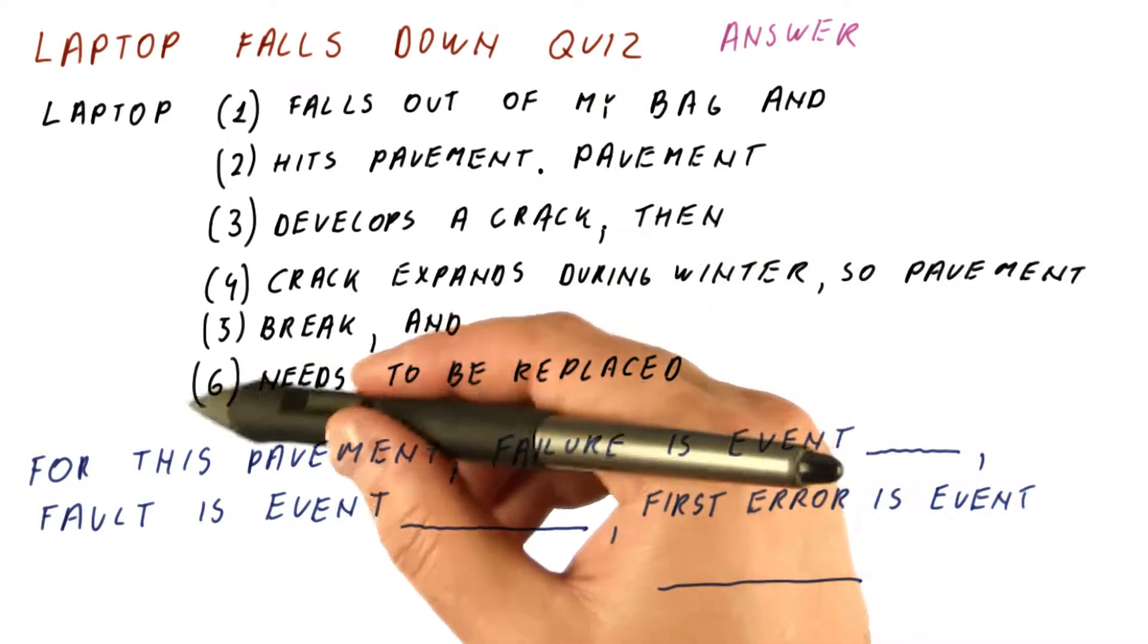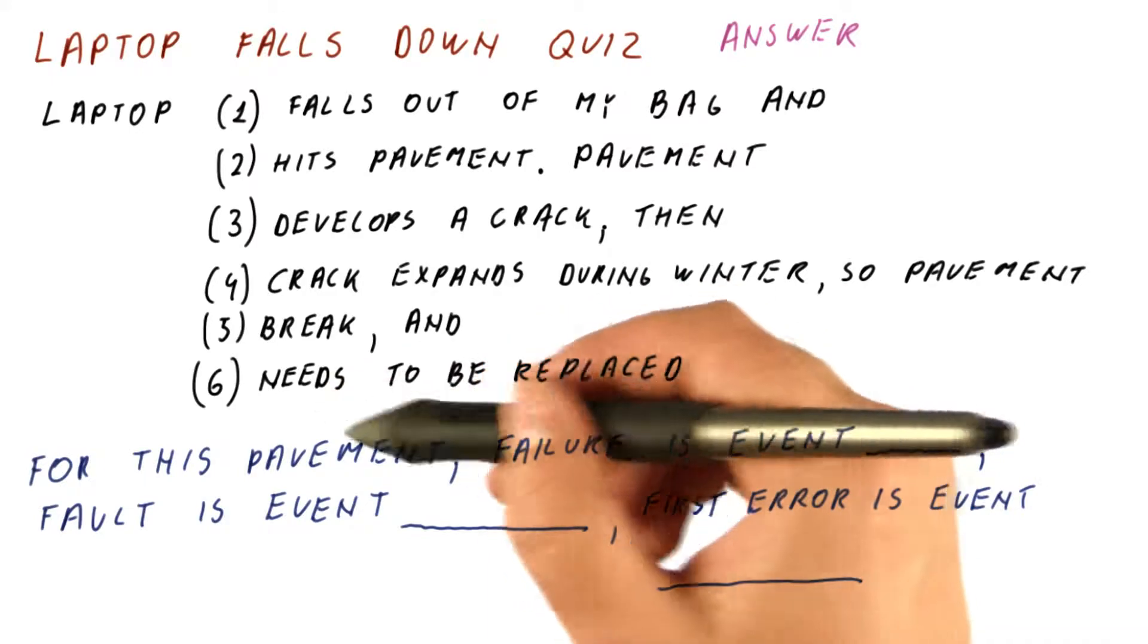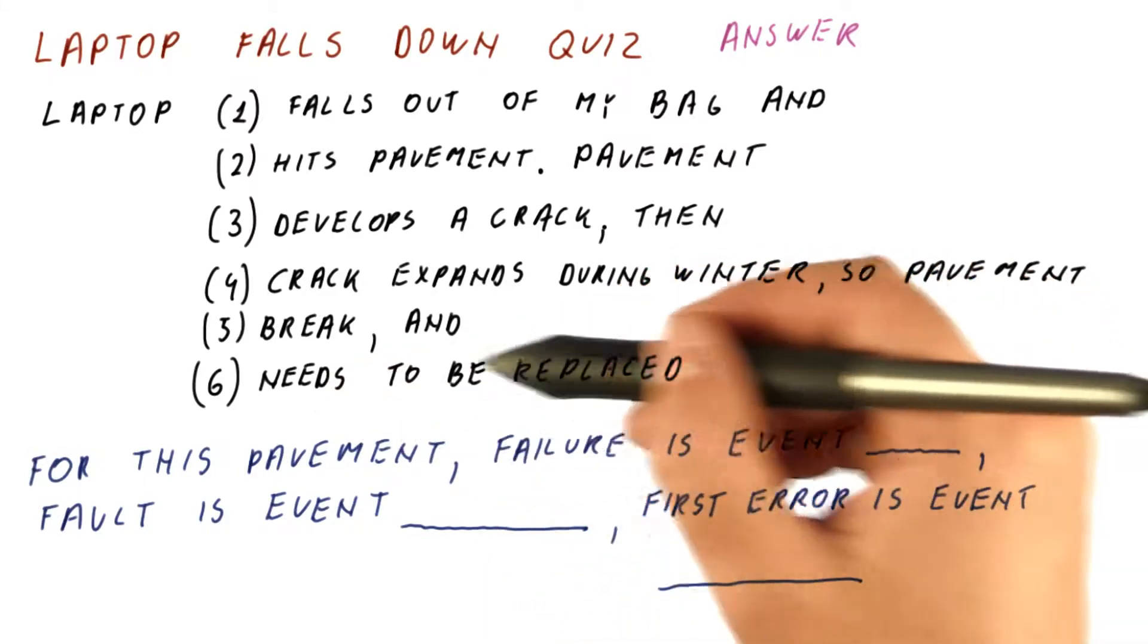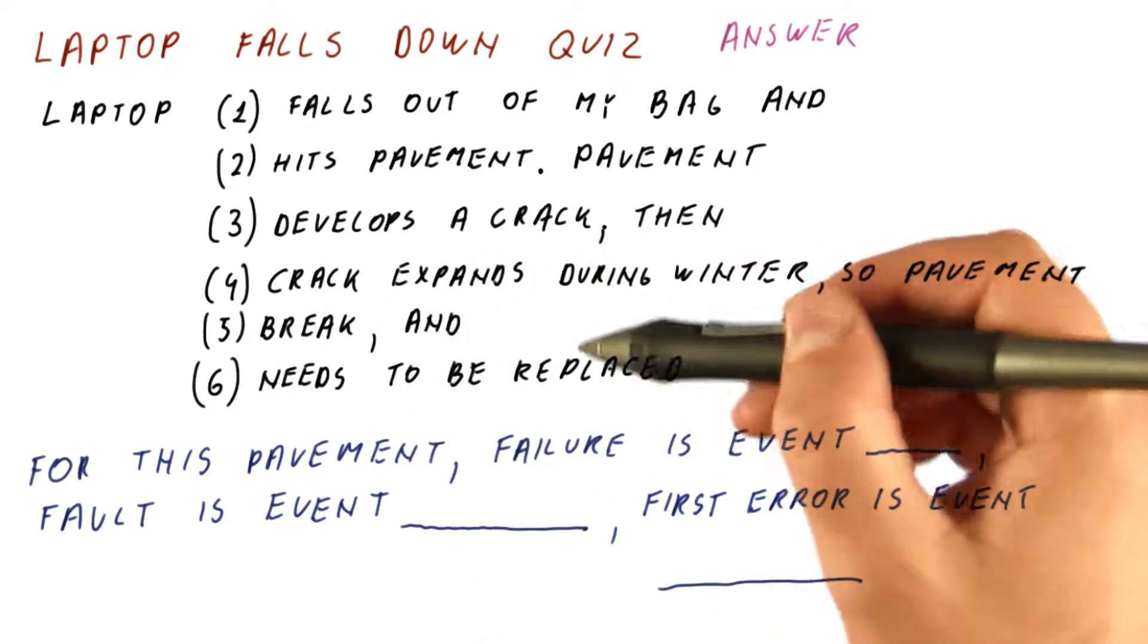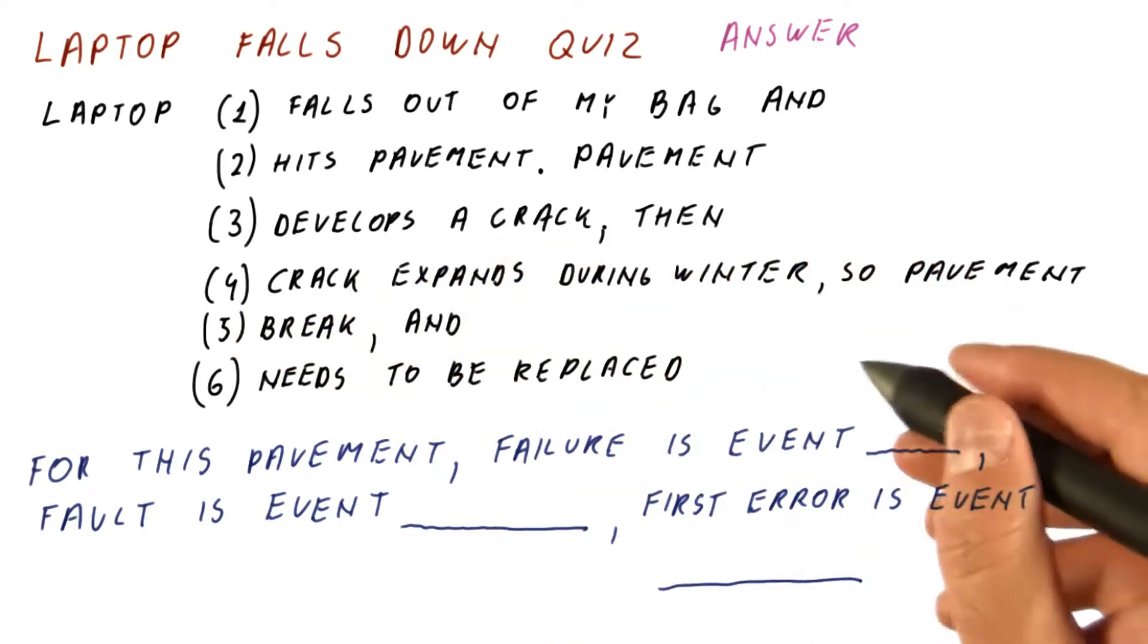Here, you might be tempted to say that it needs to be replaced is the failure. But actually, that's the repair of the failure. This is fixing the pavement. It's not something that causes it to deviate from its function. Really, it breaking caused it to need to be replaced. So breaking is the failure.